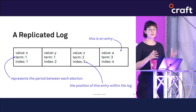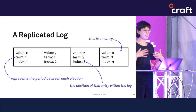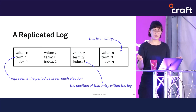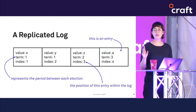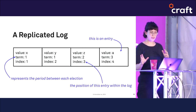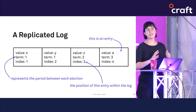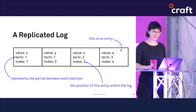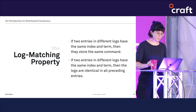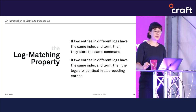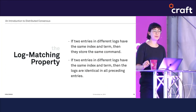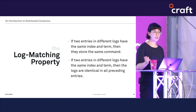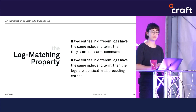Terms are the period of time between each election, meaning each term can only have one leader. The index is just the position of the entry in the log. These numbers function a bit like ballot numbers in Paxos in that we use them to keep track of everything and ensure order. The network uses the term number and index to impose a rule all nodes must follow: the log matching property, which is composed of two invariants.